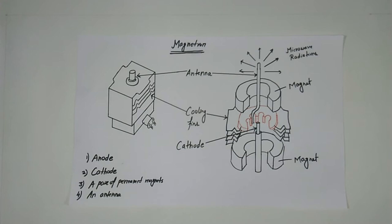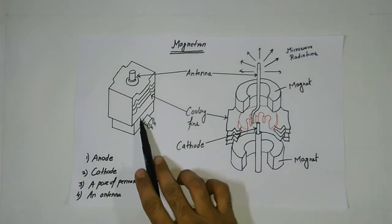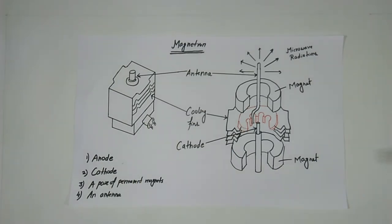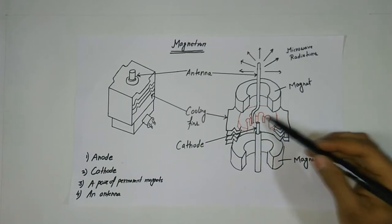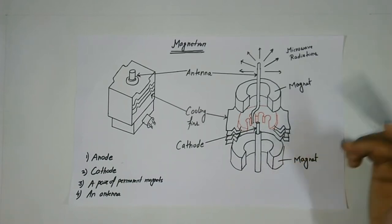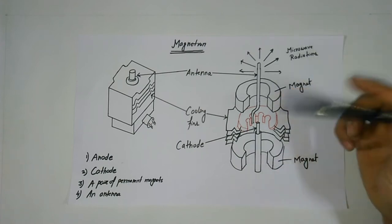Now let us discuss how these microwaves are produced inside a microwave oven. Microwave radiation is produced by a device called the magnetron which is inside the microwave oven. It consists of four major components: an anode block, a cathode, a pair of permanent magnets, and an antenna.